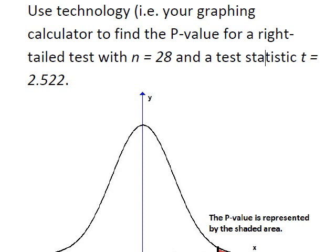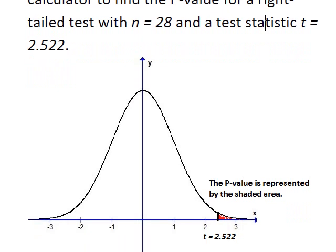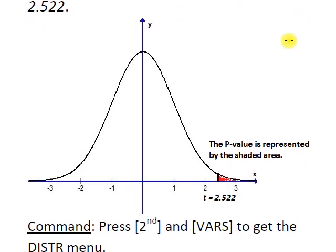Keep in mind what we want to find out here. I drew a little graph here so we can see what we're looking for. Since it's a right-tailed test, we're looking for this area to the right of the test statistic on the t-distribution. Here's our test statistic right here, 2.522, about halfway between 2 and 3, and this red area that you see represents the p-value. So let's figure out how we're going to do that.